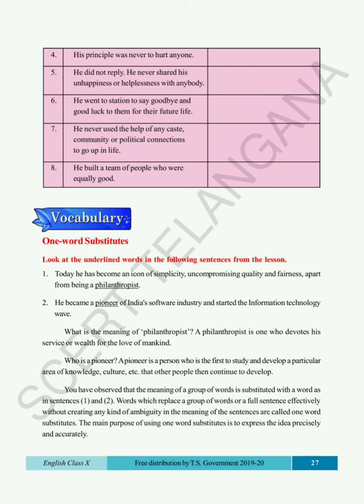What is the meaning of philanthropist? A philanthropist is one who devotes his service or wealth for the love of mankind. The one word substitute for a person who devotes his service or wealth for the love of mankind is called philanthropist. And in the second sentence, the word pioneer — what is the meaning of pioneer? A pioneer is a person who is the first to study and develop a particular area of knowledge, culture, etc., that other people then continue to develop. Such a person is called the pioneer — that means the first person.